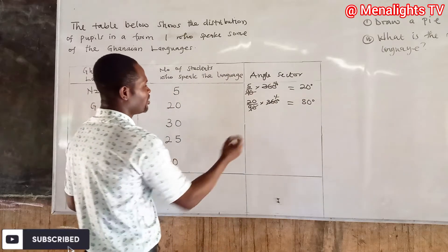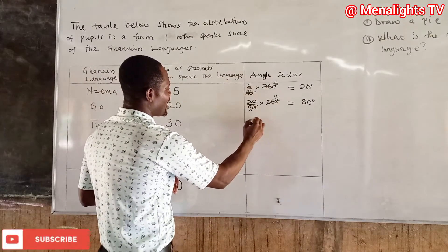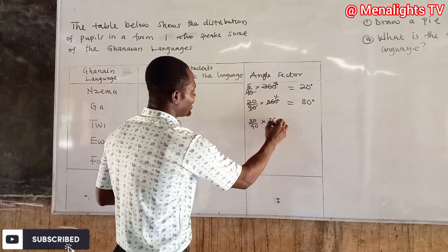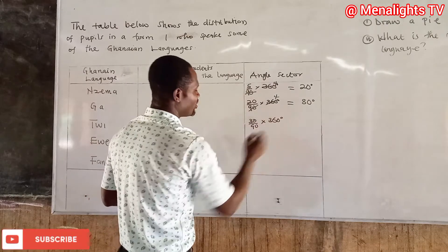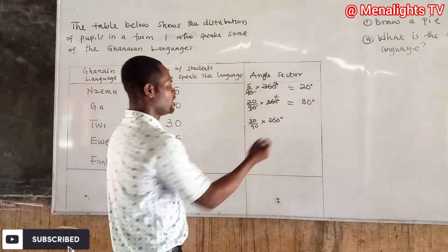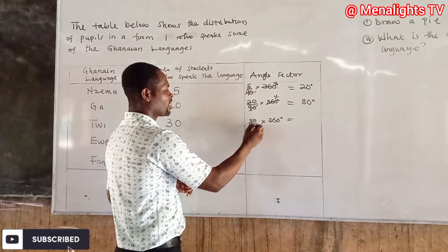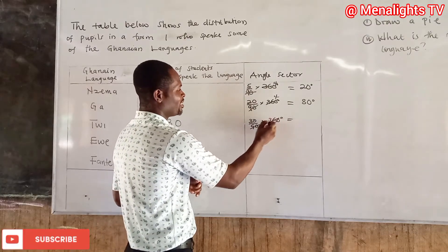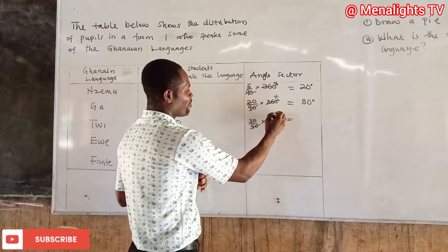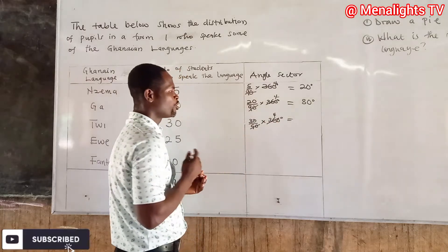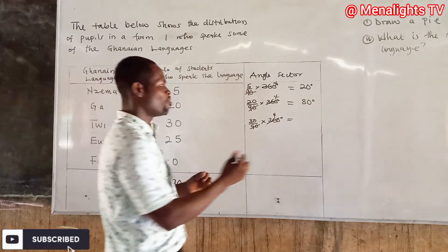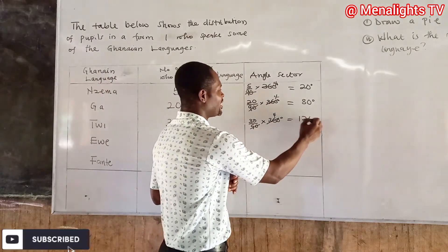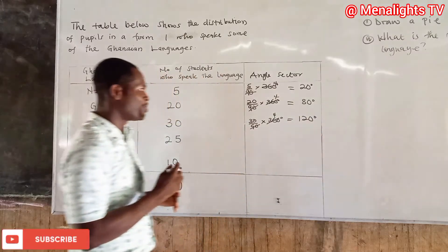For the third language, Twi, we have 30 people. So: (30/90) × 360 degrees. The same method: 90 into 360 is 4, so 4 × 30 gives us 120 degrees.